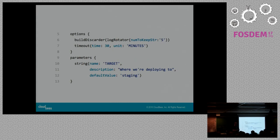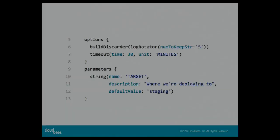The options section contains settings that apply across your entire pipeline. Here we're setting the build discarder job property to make sure that after five builds, the first one gets deleted. And timeout here is the timeout step that wraps the entire build — if the build takes more than 30 minutes, it will be killed and reported as having timed out. Things that need to apply to the whole build rather than just a part of it show up in options.